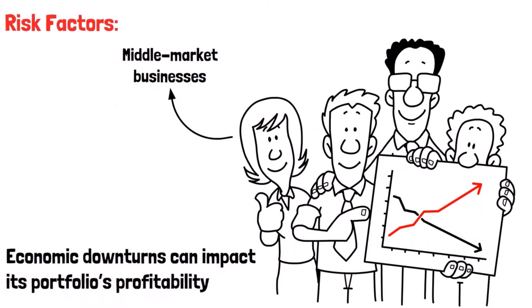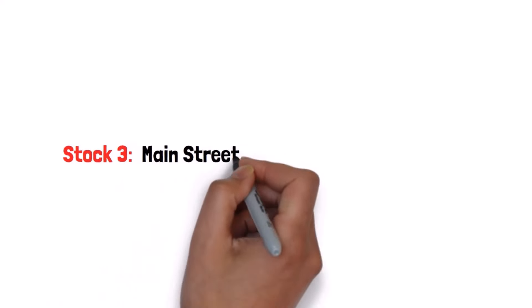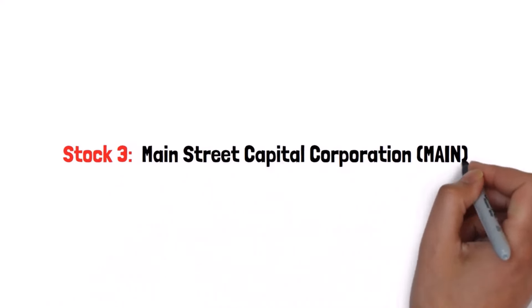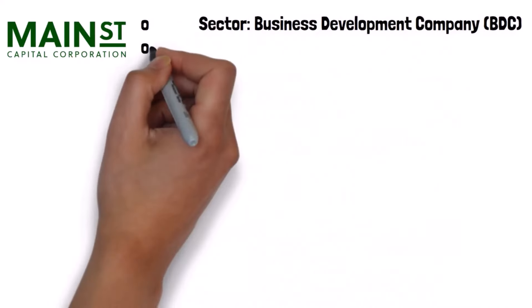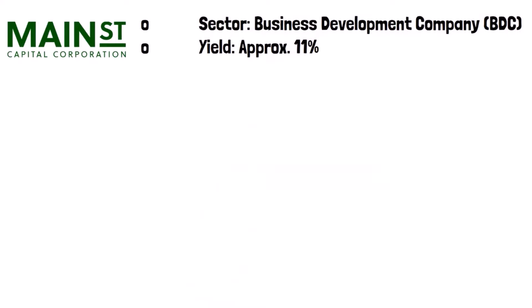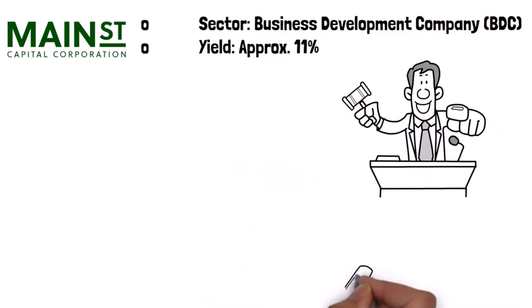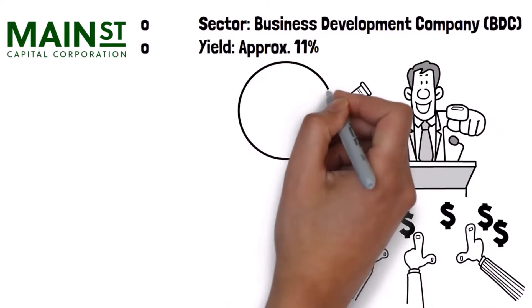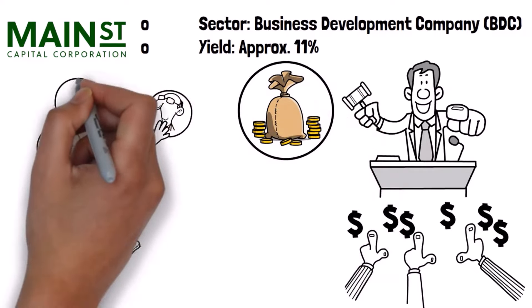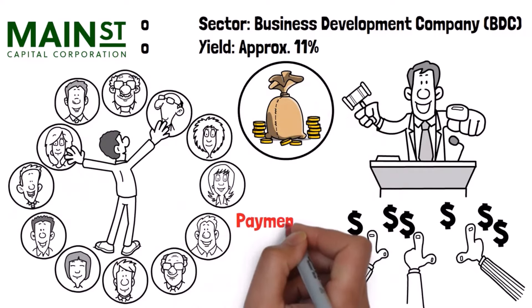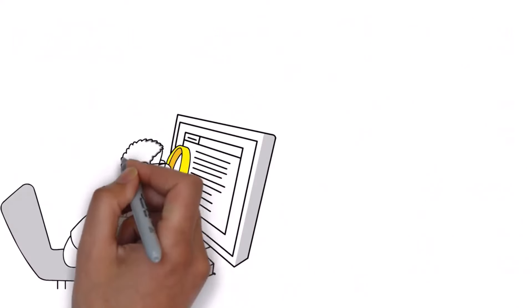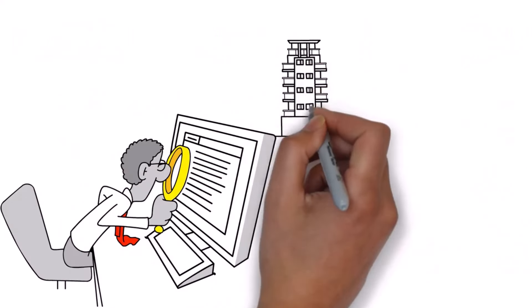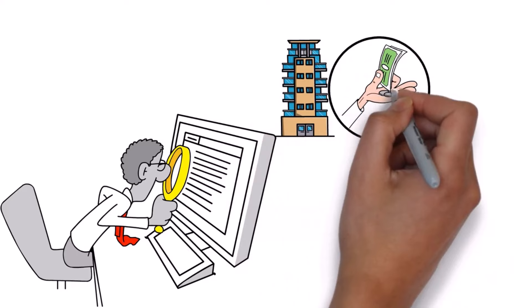Stock three: Main Street Capital Corporation (MAIN). Sector: Business Development Company (BDC). Yield: approximately 11%. MAIN provides financing to lower middle-market companies, known for its reliable payouts and strong management team. Payment date: 15th of each month. Main Street Capital stands out with its focus on lower middle-market businesses, offering not just capital but also strategic guidance. Its reliable dividend makes it a cornerstone in our weekly income strategy.